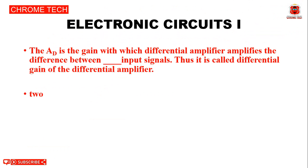Next question: AD is the gain with which a differential amplifier amplifies the difference between two input signals, thus it is called differential gain. The answer is 2 input signals.